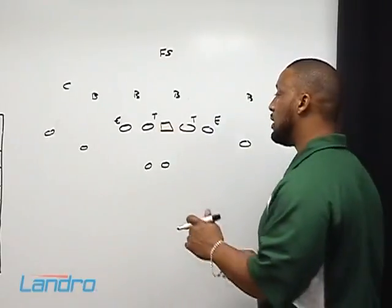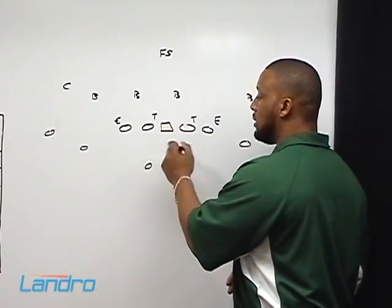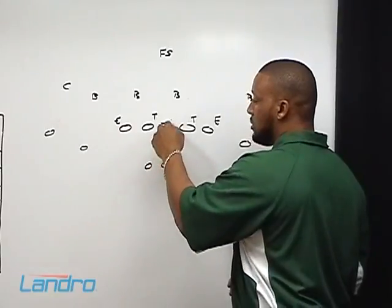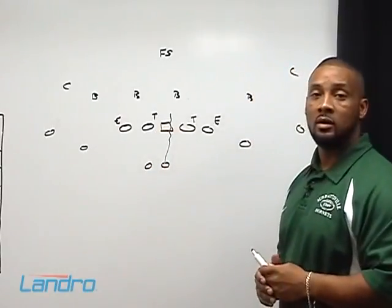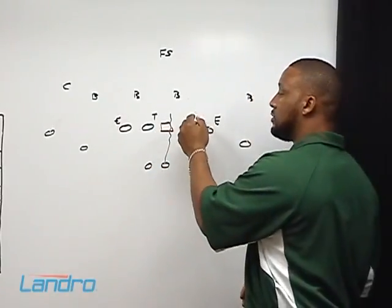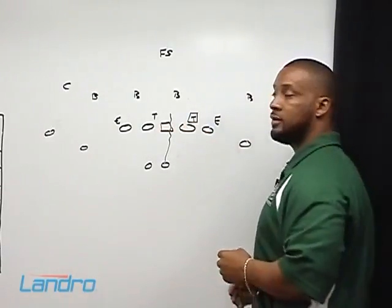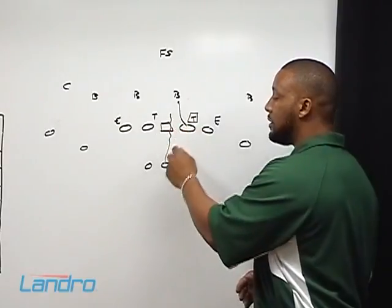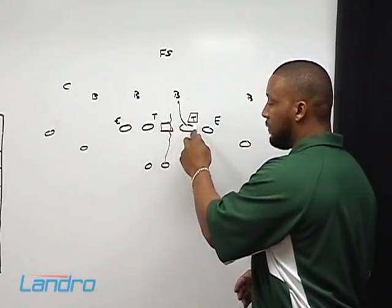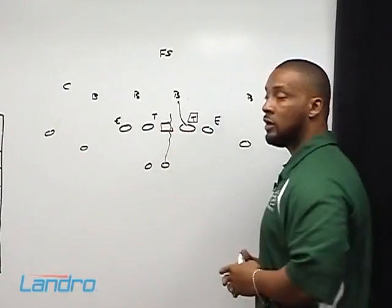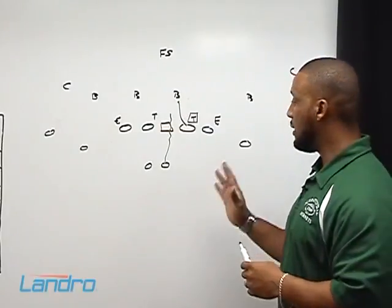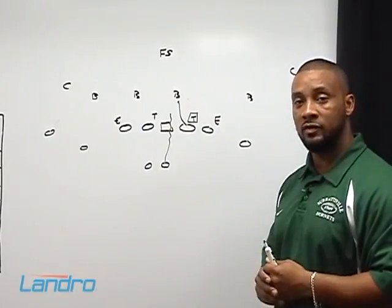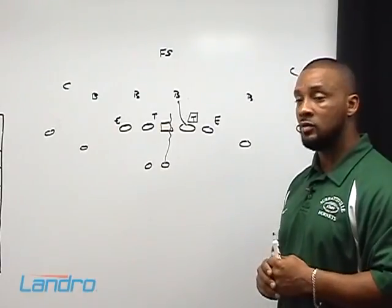We'll start with the midline. With the midline option, you're always reading the first man — the fullback is diving actually at the butt of the center. With him diving at the butt of the center, it allows us to read the defensive tackle. We're not blocking the defensive tackle. Whatever decision he makes, we'll pull the ball if he tackles the fullback; if not, we'll run the ball with the quarterback. With that advantage, we don't have to block a defensive tackle that could be over 250 pounds.